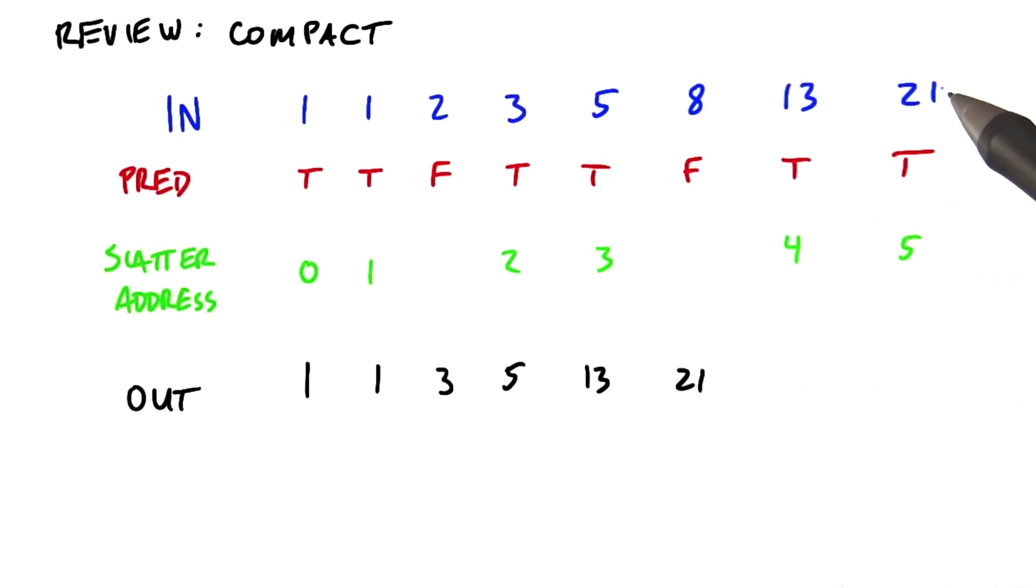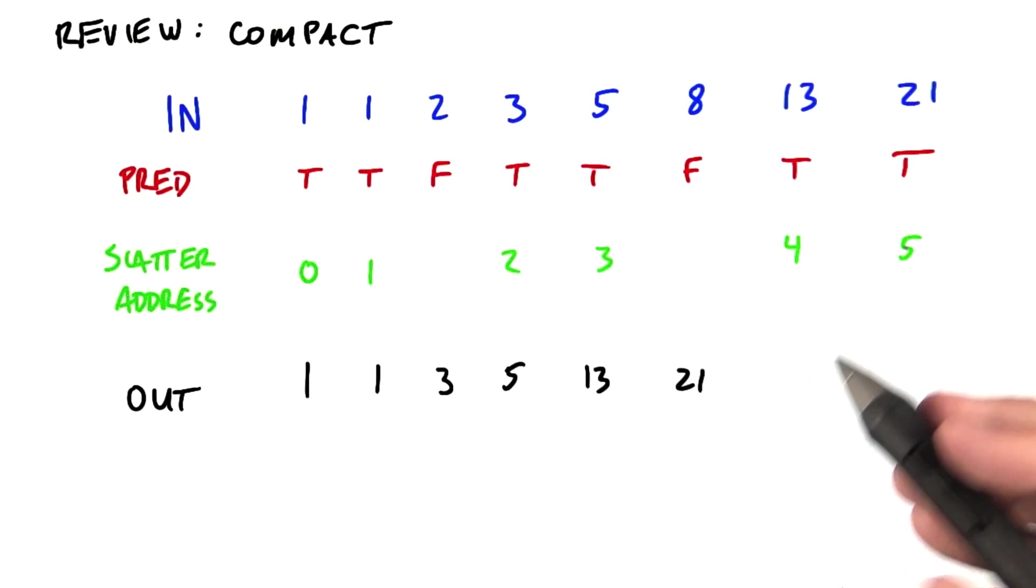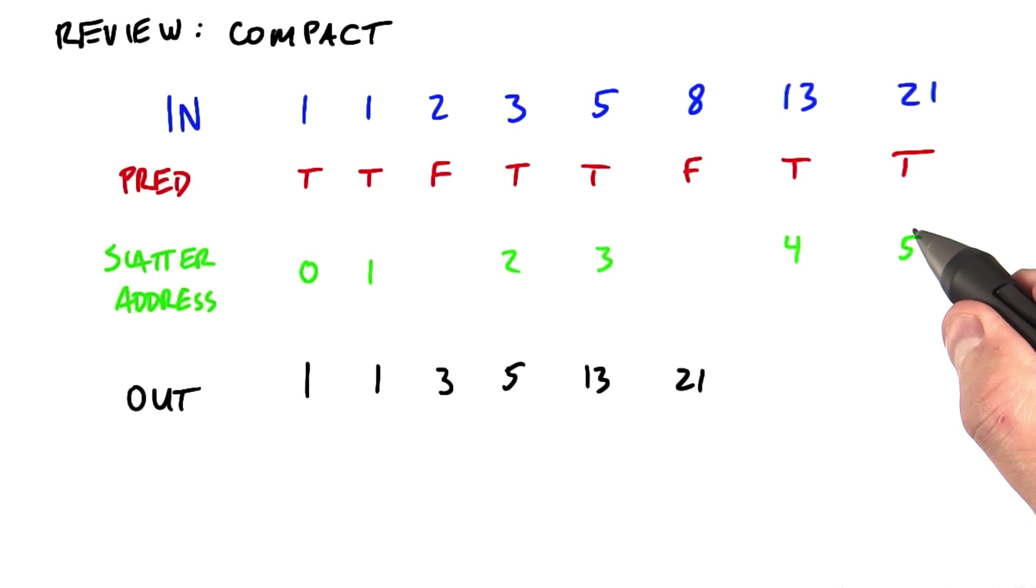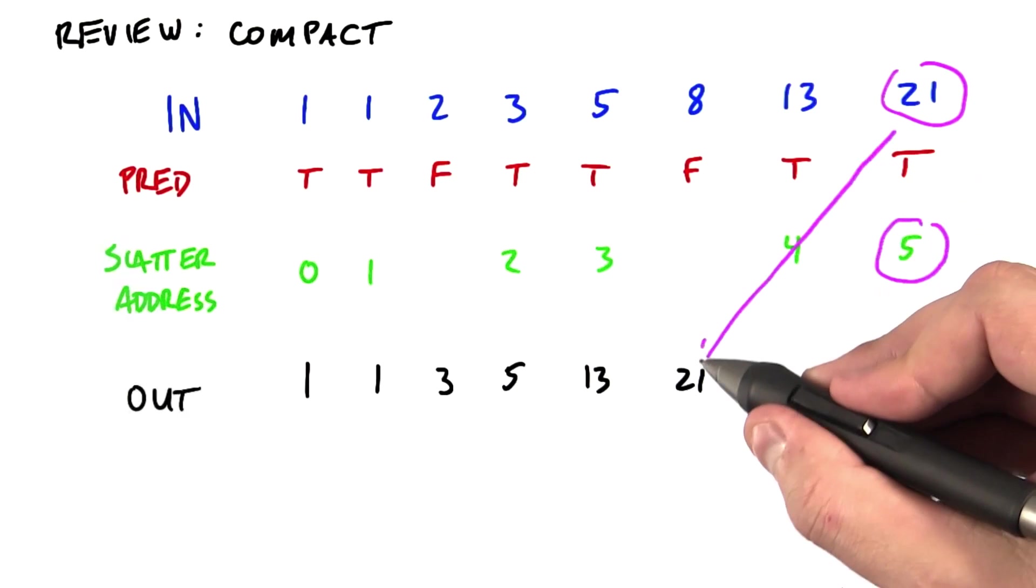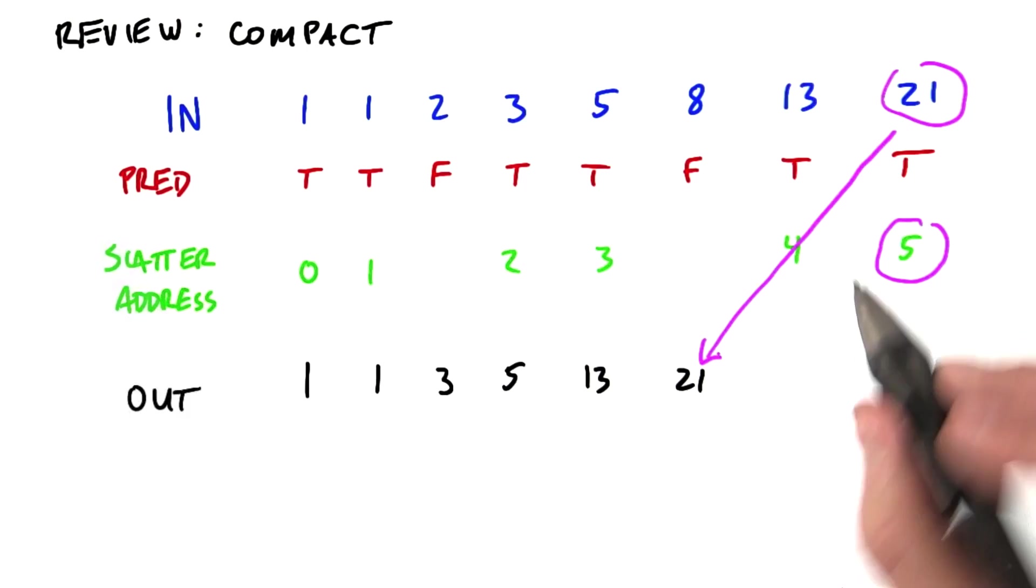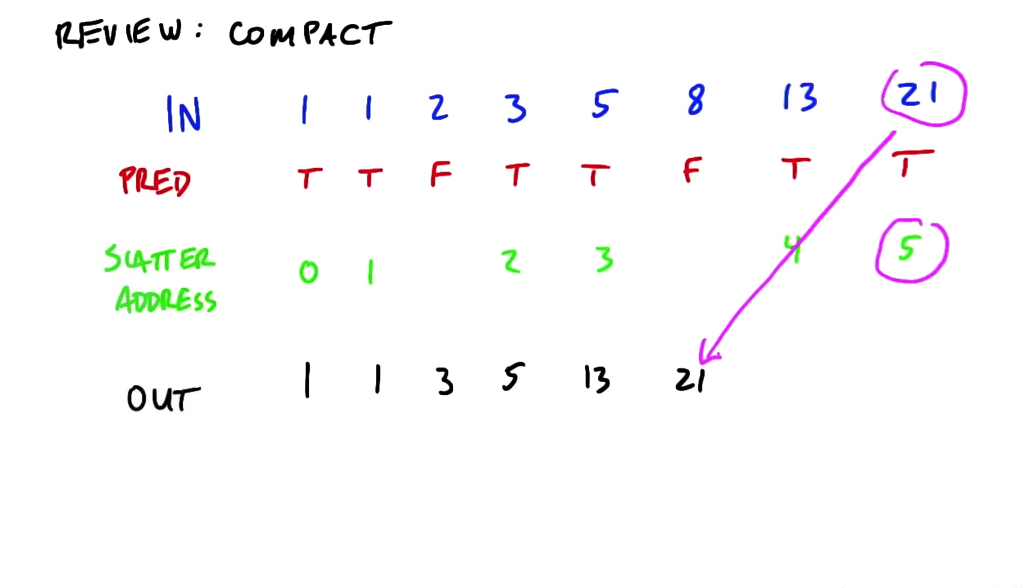And then we would scatter these input elements using these scatter addresses into the output array. We've computed, for instance, that element 21 would be scattered by address 5 into output location 5. We're going to have the same goal here with merge, but we're going to use a different algorithm.